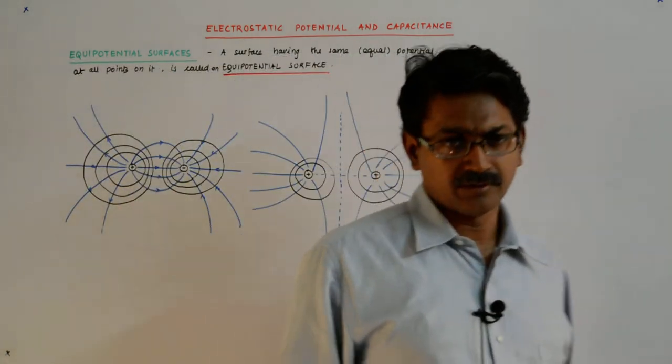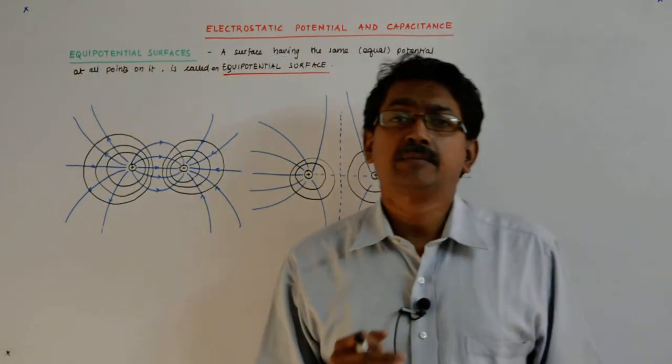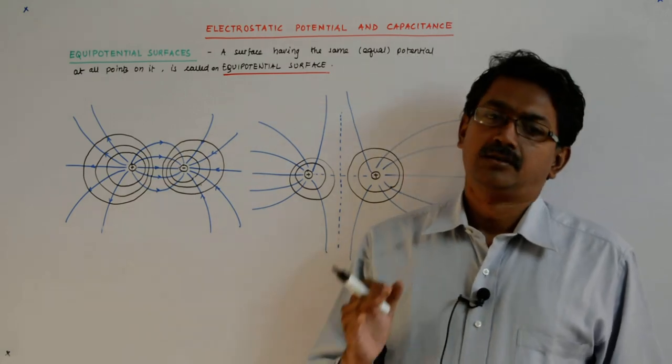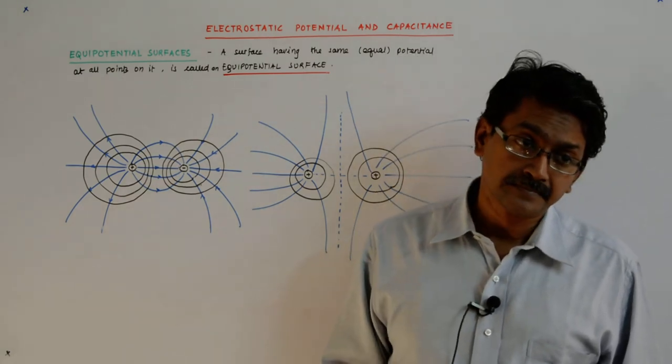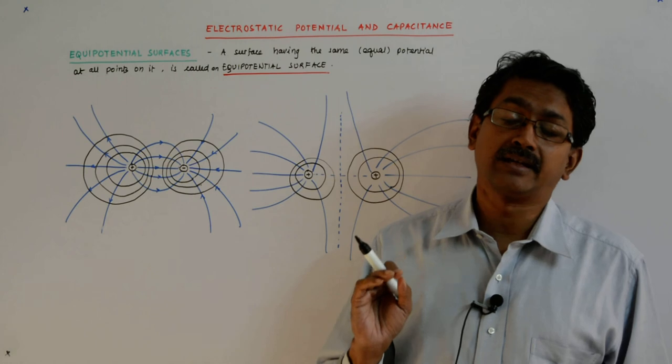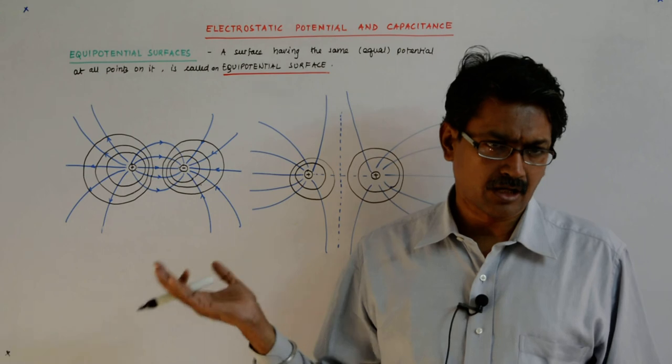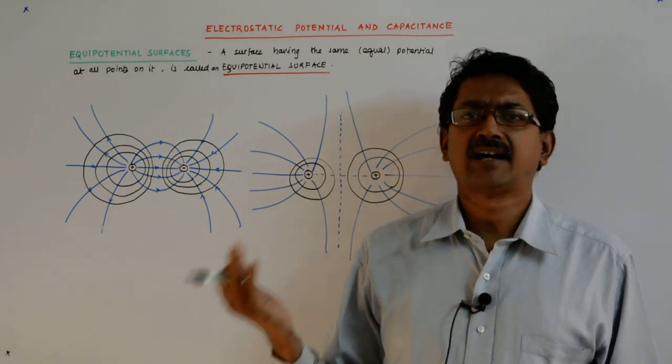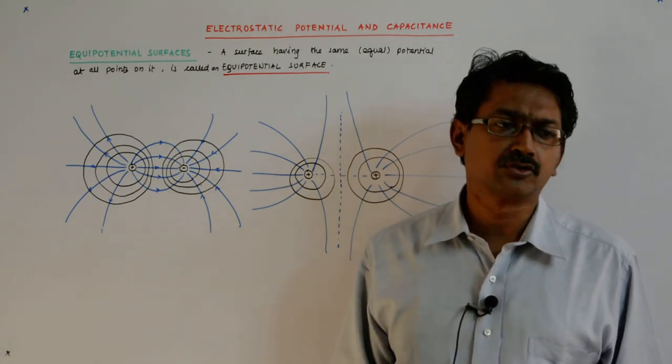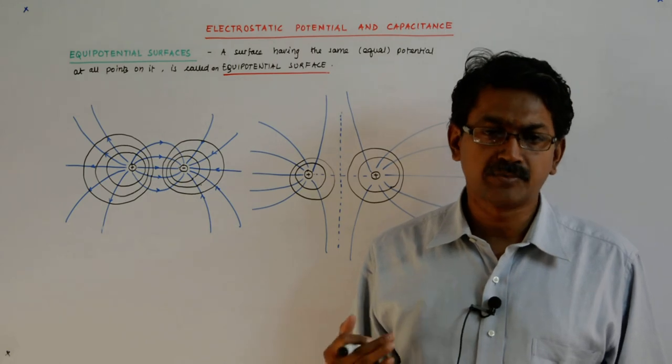So, for any charge configuration, if you are able to draw the field, you will be able to draw the equipotential surfaces. And we understand why it is always perpendicular to the electric field lines. And it has to be, it has to be.